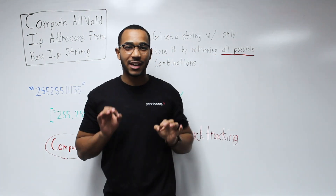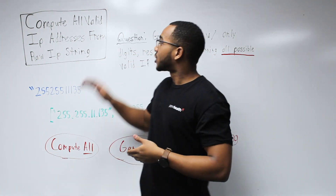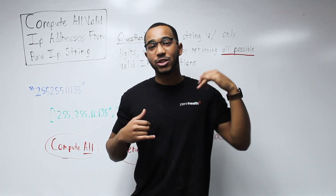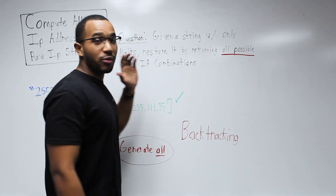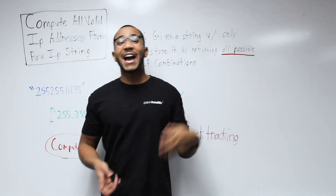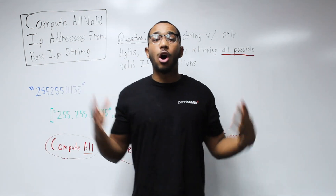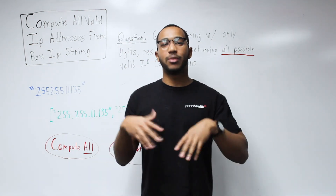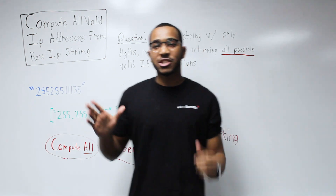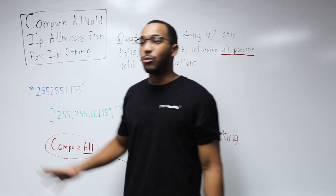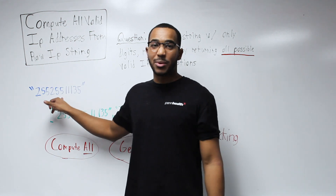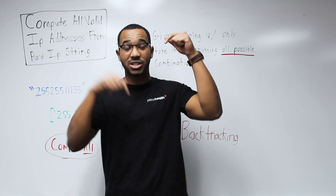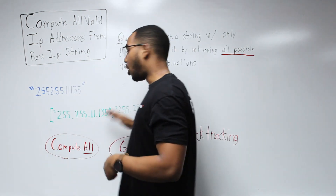Today we have a problem called 'Compute All IP Addresses from a Raw IP String.' Given a string with only numbers, restore it back to an IP address with all possible IP addresses that could have been formed from the string. Imagine having a regular IP address, removing all the dots — we need to go backwards and generate all original IP addresses by placing the dots back in to get all combinations.